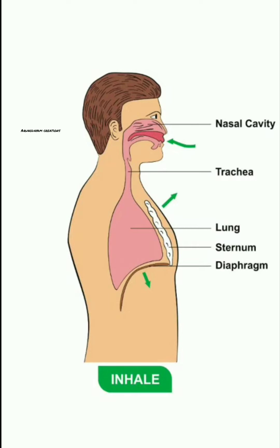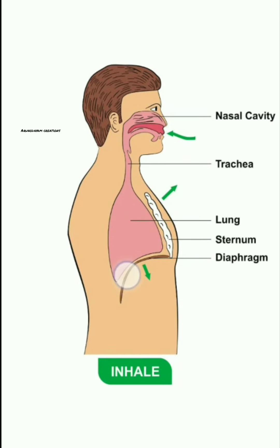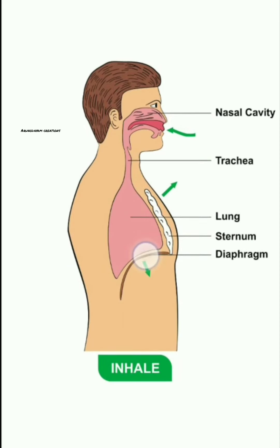The first step in respiration is breathing. Breathing has two steps: inhalation and exhalation. During this process, lungs cannot handle it alone. Lungs take the help of chest wall muscles and one flexible, flattened muscle called the diaphragm. This dome-shaped structure is called the diaphragm.